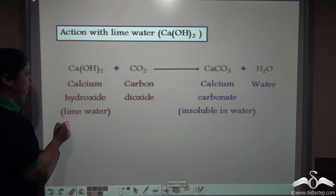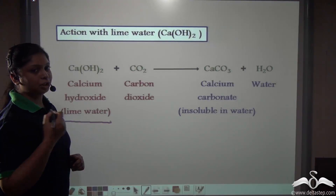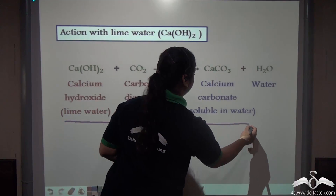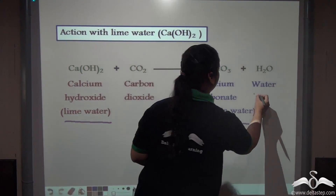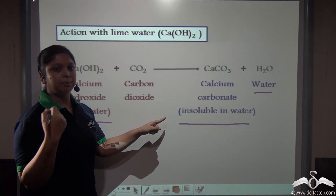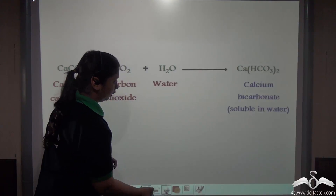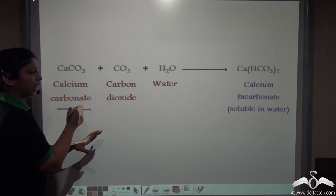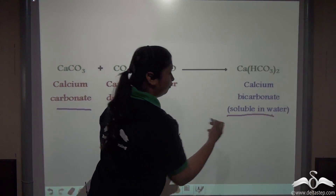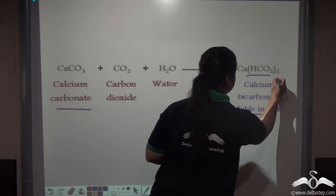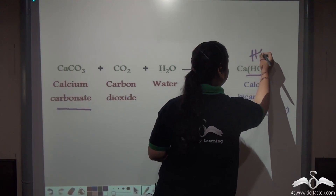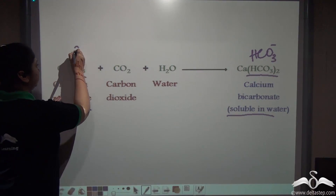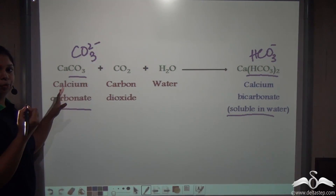Lime water is chemically known as calcium hydroxide. When we blow carbon dioxide gas into a solution of lime water, an insoluble substance known as calcium carbonate is formed along with water. This insoluble substance makes the clear lime water milky. But when we pass more carbon dioxide gas into the milky solution containing calcium carbonate, calcium bicarbonate forms, which is soluble in water. Calcium bicarbonate has the formula with HCO₃⁻, which is soluble, whereas calcium carbonate is insoluble and turns the water milky.